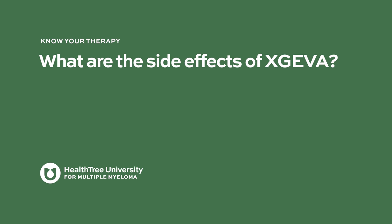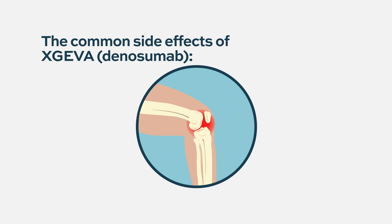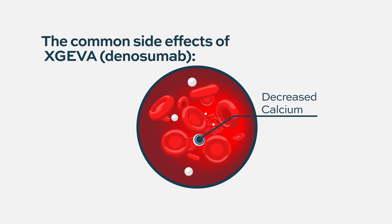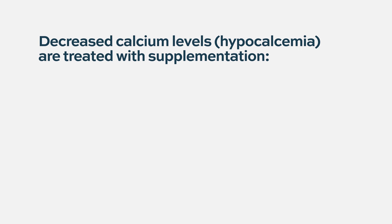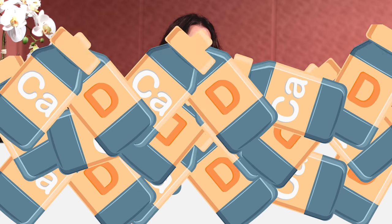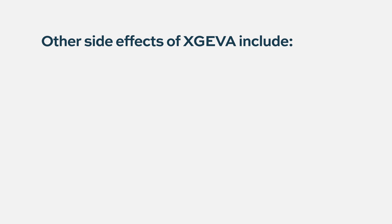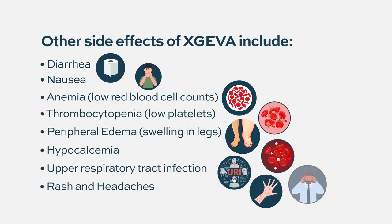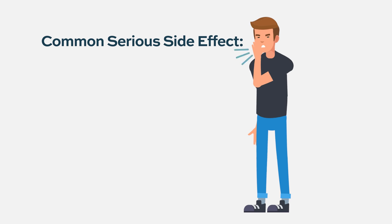What are the side effects of Xgeva? Common side effects of Denosumab include bony aches, which can be treated with Tylenol pre-medication. You could also have decreased calcium in the blood after it's administered, especially if you have reduced kidney function, putting you at increased risk for low calcium. That's usually easily treated with calcium supplementation, which you should be taking anyway along with vitamin D to help build up your bones. Additionally, for multiple myeloma patients receiving Xgeva, the most common adverse reactions were diarrhea, nausea, anemia, thrombocytopenia, peripheral edema, hypocalcemia, upper respiratory tract infection, rash, and headaches. The most common serious adverse reaction was pneumonia.